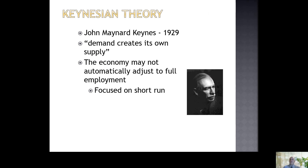Along came an economist by the name of John Maynard Keynes, who essentially flipped the perspective around. He said the problem during the Great Depression had to do with the fact that people had no money and had lost their jobs. If we could somehow get money into the hands of people, they could start spending again and help the businesses out. Essentially, it was the consumer side of the economy that drove the ups and downs. This is a very short-run perspective, whereas classical economic thought took the long-run view. Keynes believed that in the long run, we're all dead, and so we really need to focus on the short run.